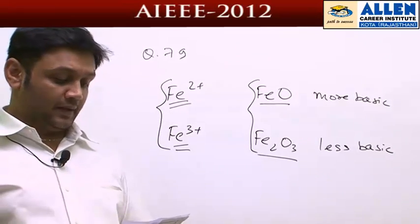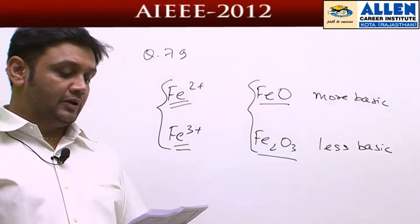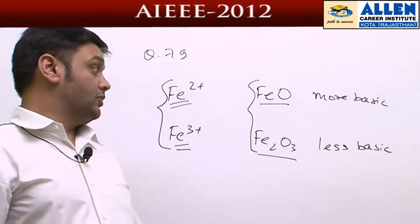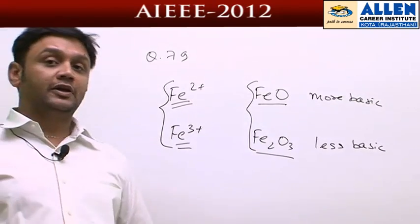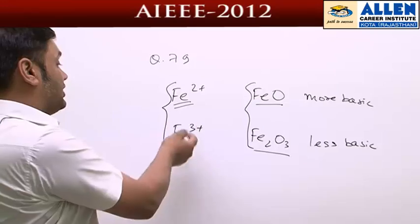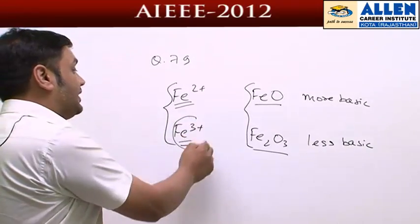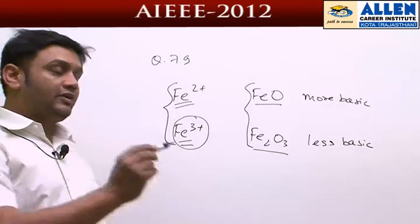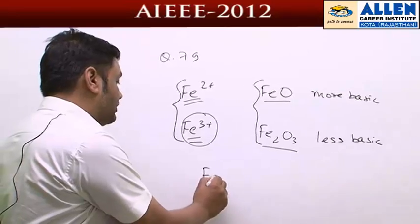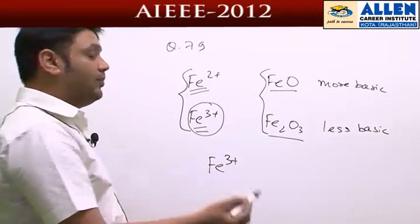The next one says ferrous compounds are relatively more ionic. The property to show ionic character depends on polarizing power. Ferric ion has higher polarizing power, so whatever anion comes in contact with ferric ion will be more polarized.